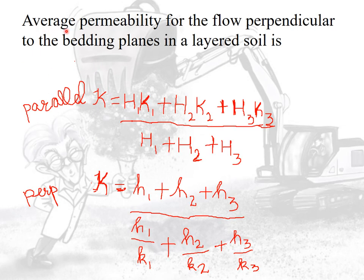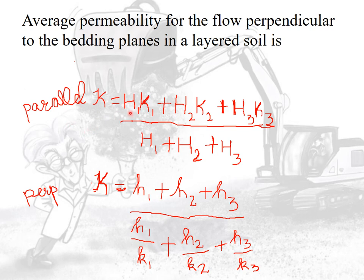The average permeability for flow perpendicular to the bedding planes in a layered soil, k-perpendicular or k-vertical, is given by: (h1 + h2 + h3) divided by (h1/k1 + h2/k2 + h3/k3). For k-parallel or k-horizontal, the equation is (h1·k1 + h2·k2 + h3·k3) divided by (h1 + h2 + h3). k-parallel, that is k-horizontal, is always greater.